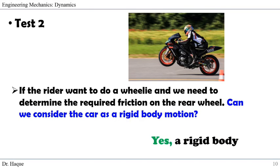Yes, it will be a rigid body since we have to consider that there is no reaction force at the front wheel — there will be normal reaction force only on the rear wheel. Thus we cannot neglect the size and we have to account for the rotation tendency. Therefore, we cannot assume the bike as a particle, but as a rigid body.